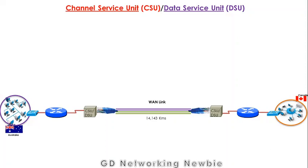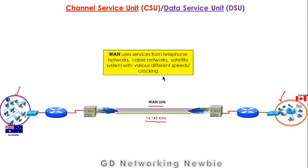Today we are going to discuss Channel Service Unit and Data Service Unit. If we have two networks that are really far away from each other — for example, 14,000 kilometers apart — then we need a wide area network link. These wide area networks use services from telephone networks, cable networks, or satellite systems.